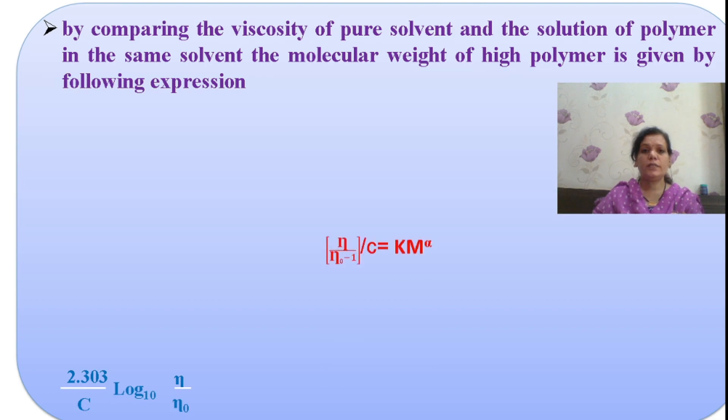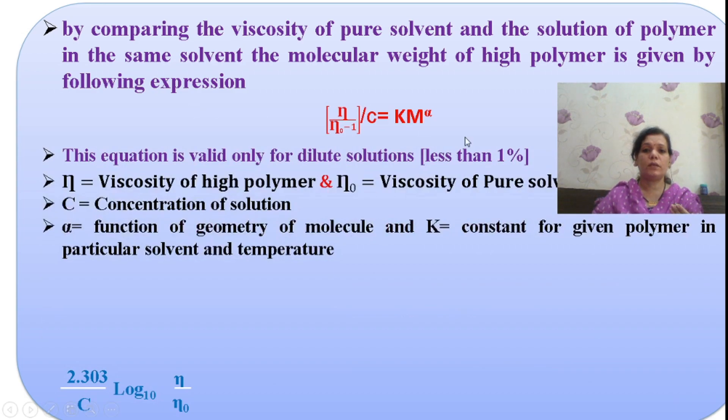In today's experiment we are comparing the viscosity of pure solvent and a solution of polymer prepared in the same solvent to find the molecular weight. This is the expression we are going to use, where this is the viscosity of a polymer and this is the viscosity of a pure solvent. We compare this with respect to concentration of solution which contributes to the geometry of the molecule in terms of alpha. K is a constant given for a particular polymer in a solvent at a temperature.